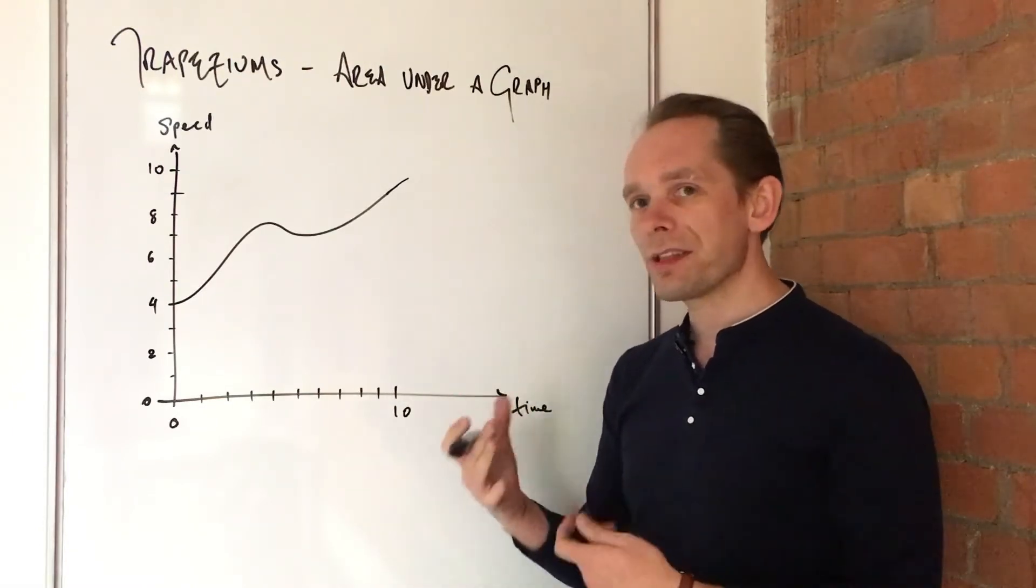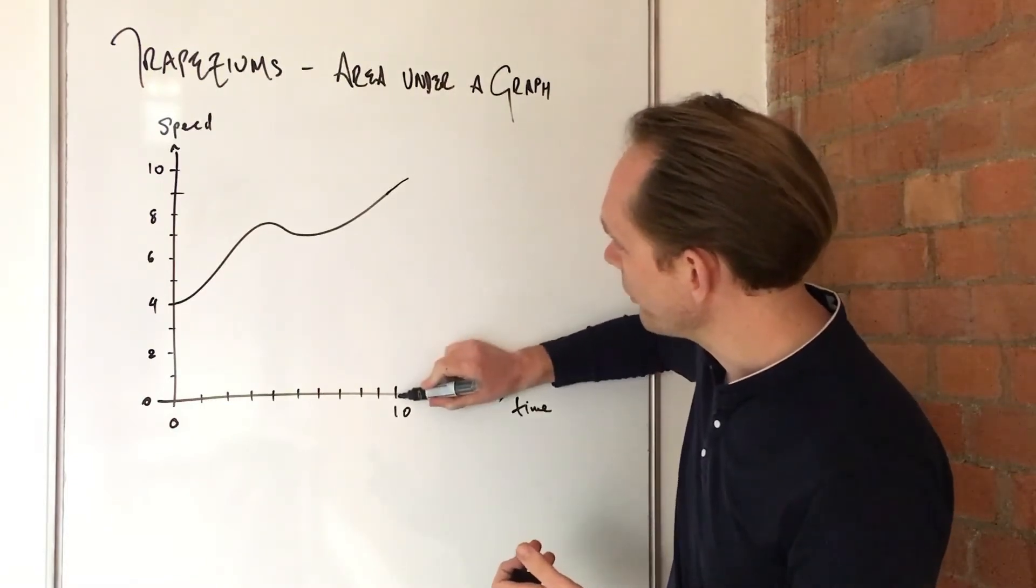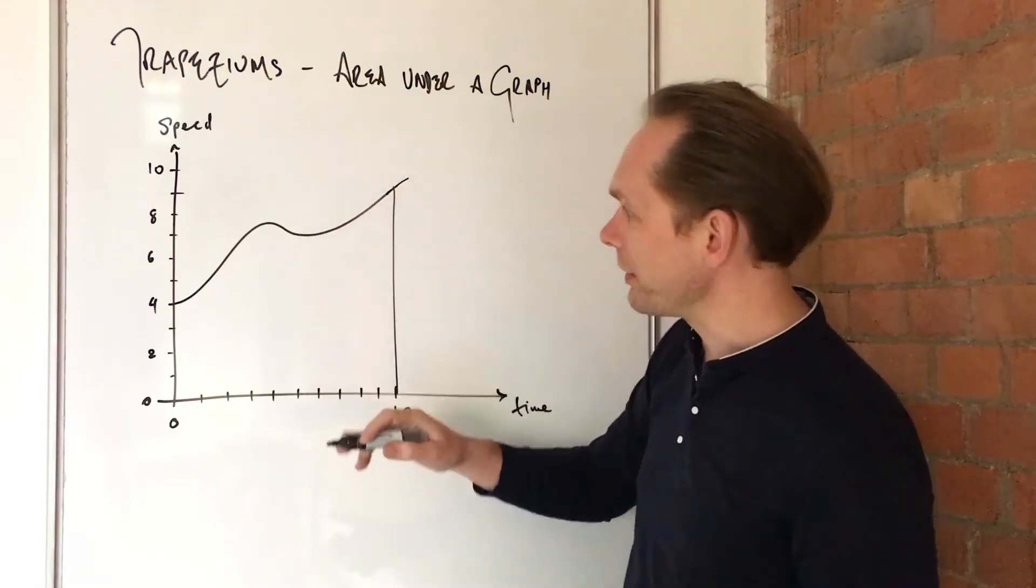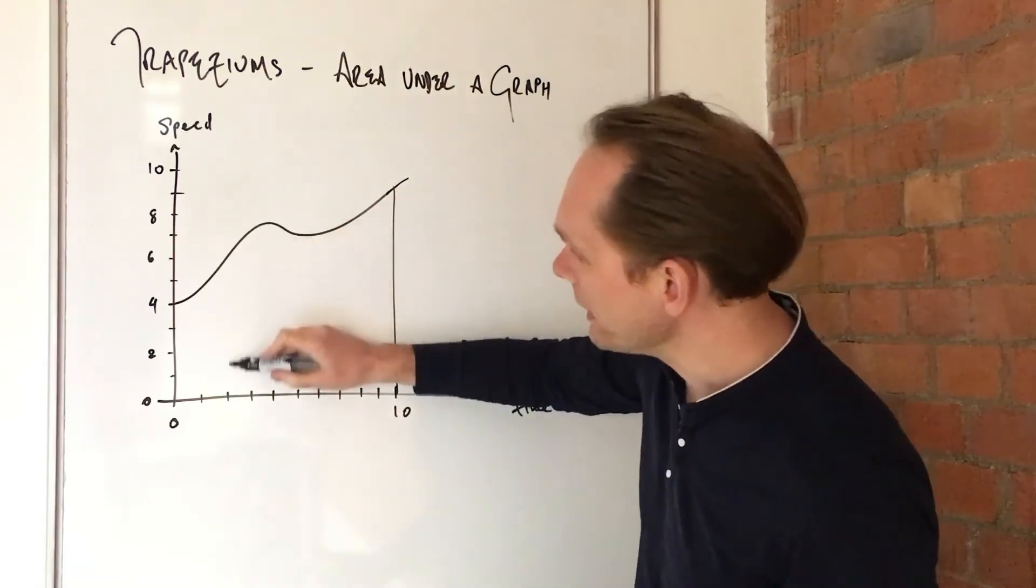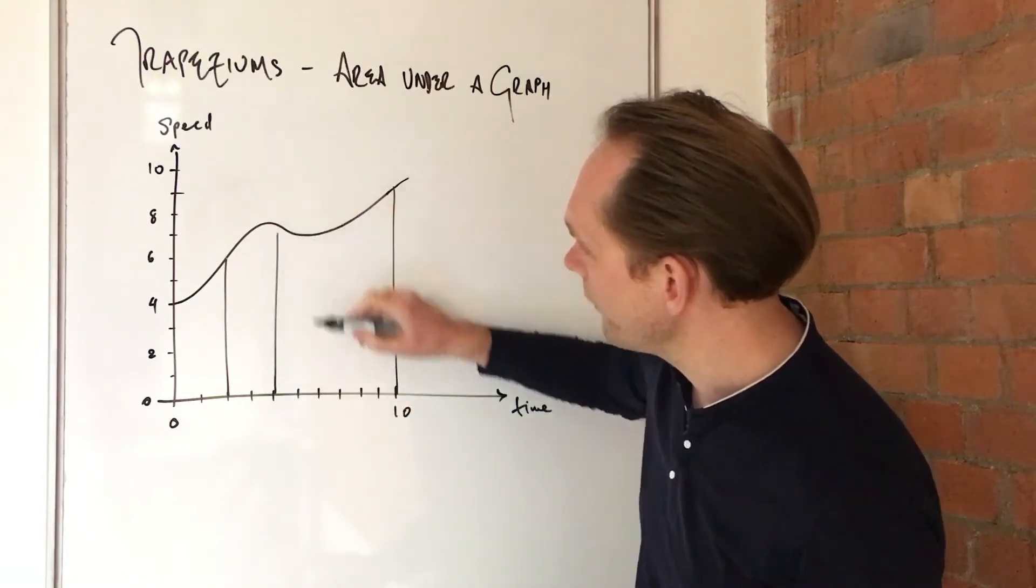Well, you can do this thing with trapeziums. It's pretty straightforward. The first thing is to take your area, now apologies, I'm not going to do perfect lines because it's all freehand, as you can see. You're going to take this area and split it up into equal parts. So let's say every two seconds, we're going to throw a vertical line up here.